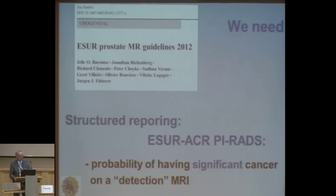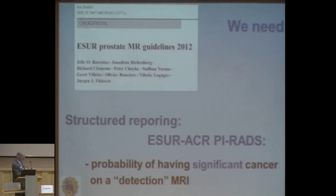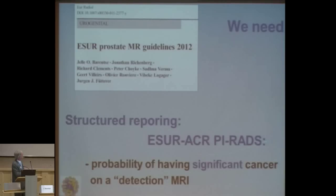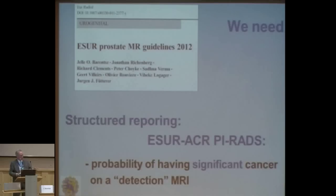If you ask radiologists to look at an image, ten radiologists can have a nice discussion on how it looks. You need to structure the way radiologists look. We have been developing the so-called PI-RADS classification — like BI-RADS for breast and LI-RADS for liver. The PI-RADS gives you the probability of a significant cancer on a detection MRI from one to five: one is normal, five is abnormal, three is equivocal. Every modality is scored on a five-point scale, giving an overall score and the radiologist's interpretation.